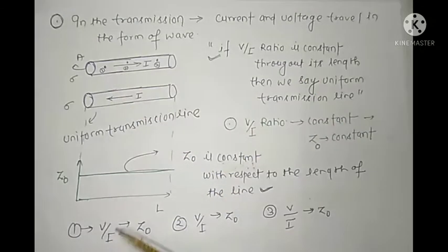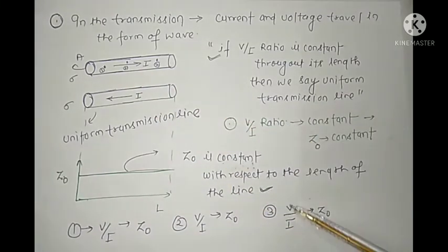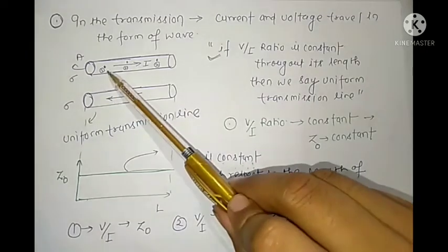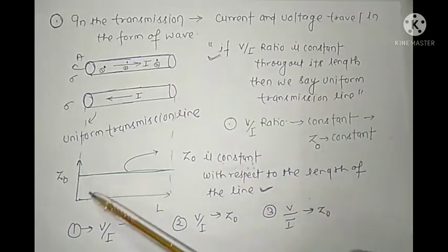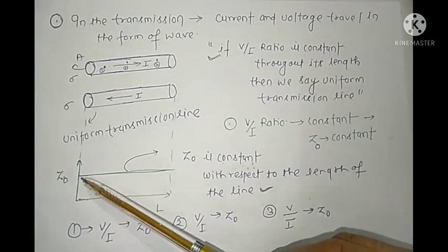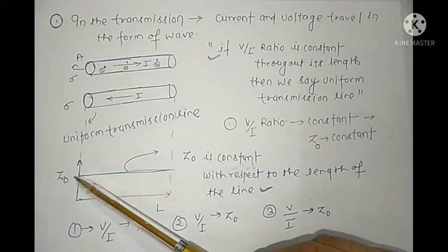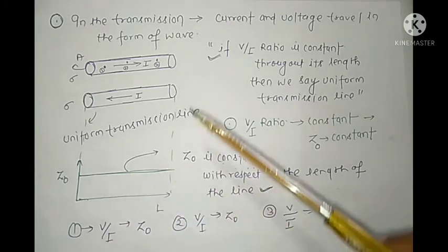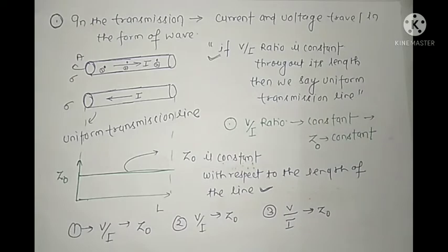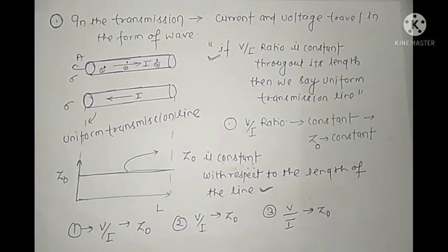At point one, V/I equals Z₀; at point two, V/I equals Z₀; at point three, V/I equals Z₀ — the ratio is the same at every point. If we draw a graph of impedance versus length, the impedance remains constant as length changes. This constant V/I ratio is the main property of the uniform transmission line.